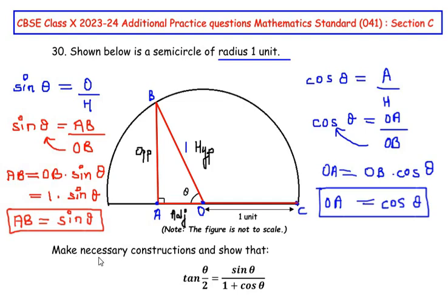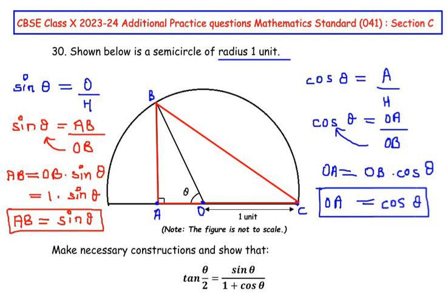We are asked to make necessary constructions and show that tan(θ/2) equals sinθ over 1 plus cosθ. So I am going to join point B with point C. Now let us consider the straight line AOC — these points lie on the diameter of the circle. The entire angle at the center along this straight line is 180 degrees. Out of 180 degrees, the angle AOB takes θ, so the remaining angle BOC is 180 minus θ.